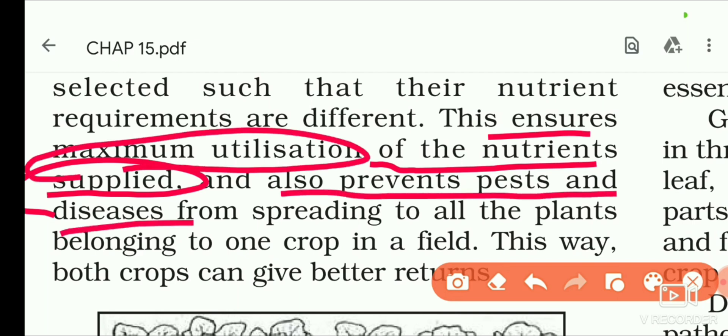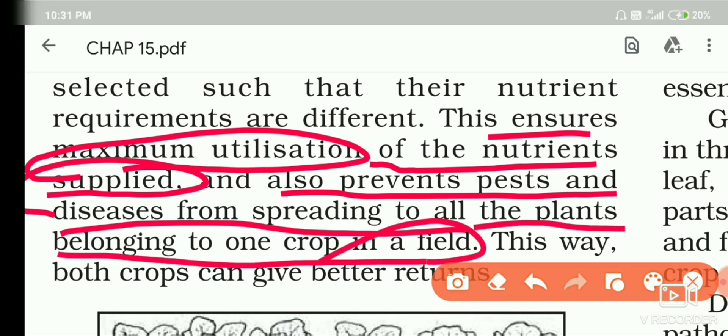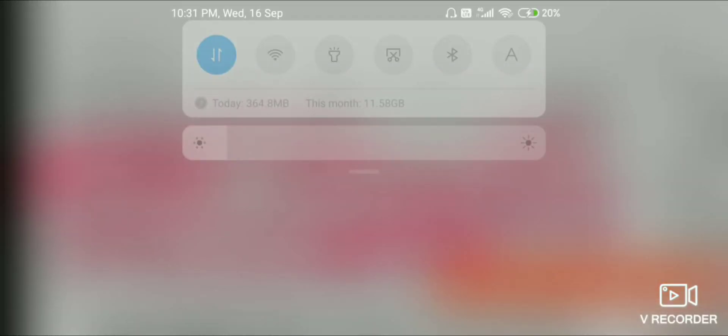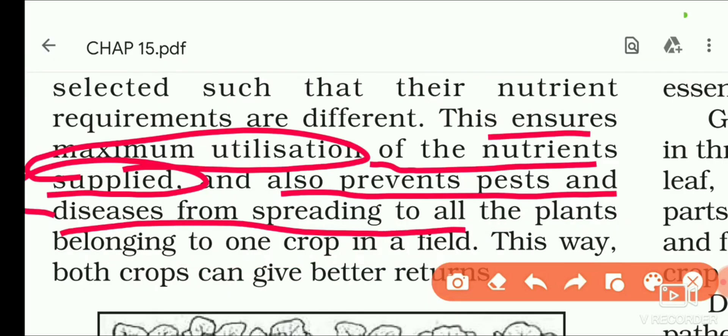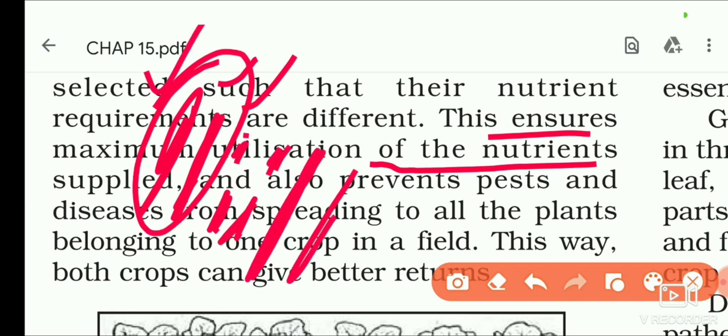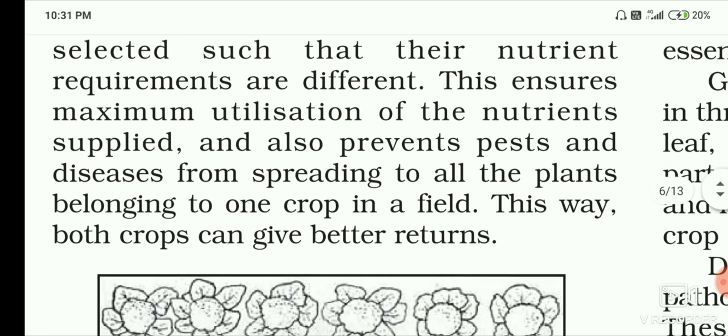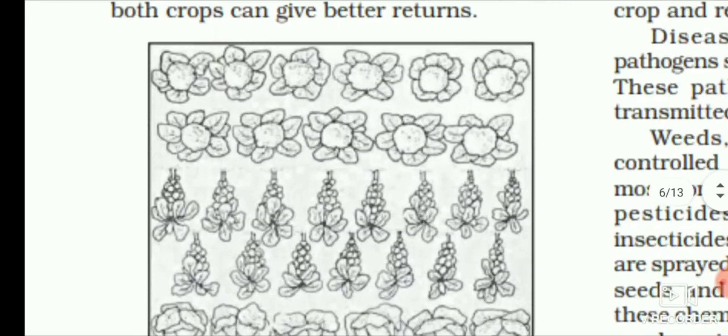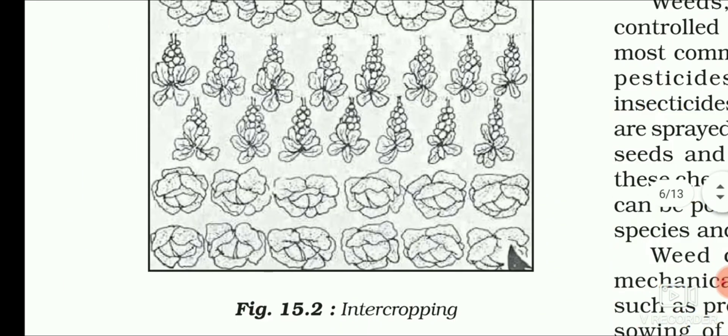This also prevents pests and diseases from spreading to all plants belonging to one crop in the field. If two rows are of the same crop and other rows are of another crop, then pests and diseases will not spread across all crops. This way, the farmer will get better returns, and the intercropping pattern is beneficial.